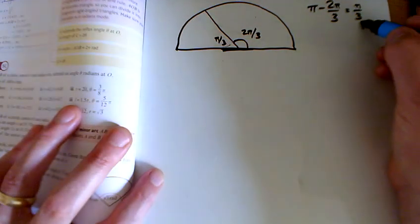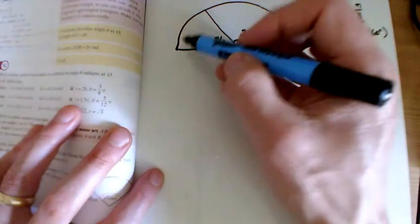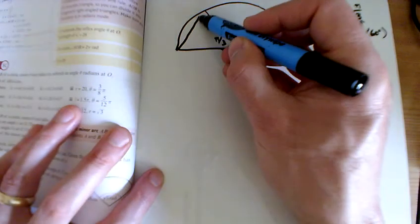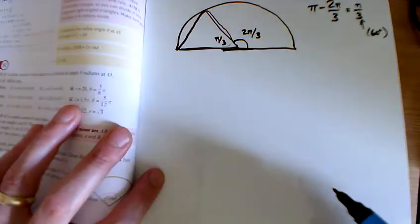Do you remember what pi over 3 is in degrees? It's 60 degrees, isn't it?